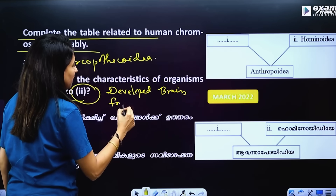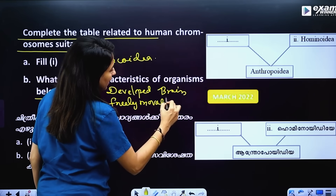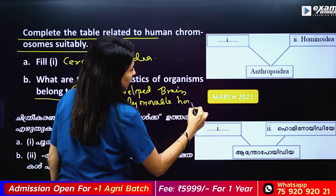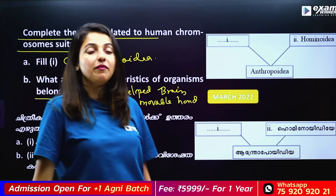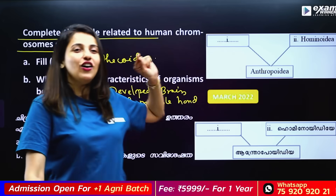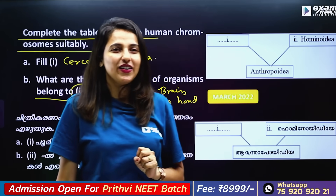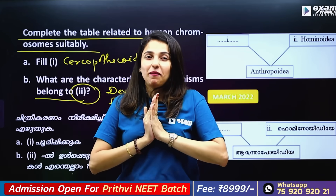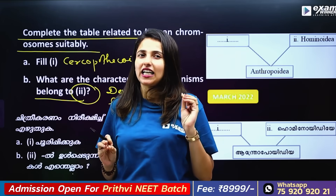Freely movable hands, upright walking under the legs — there is a discernment in DNA. The ape has a long tail, small brain. These are the distinguishing features.